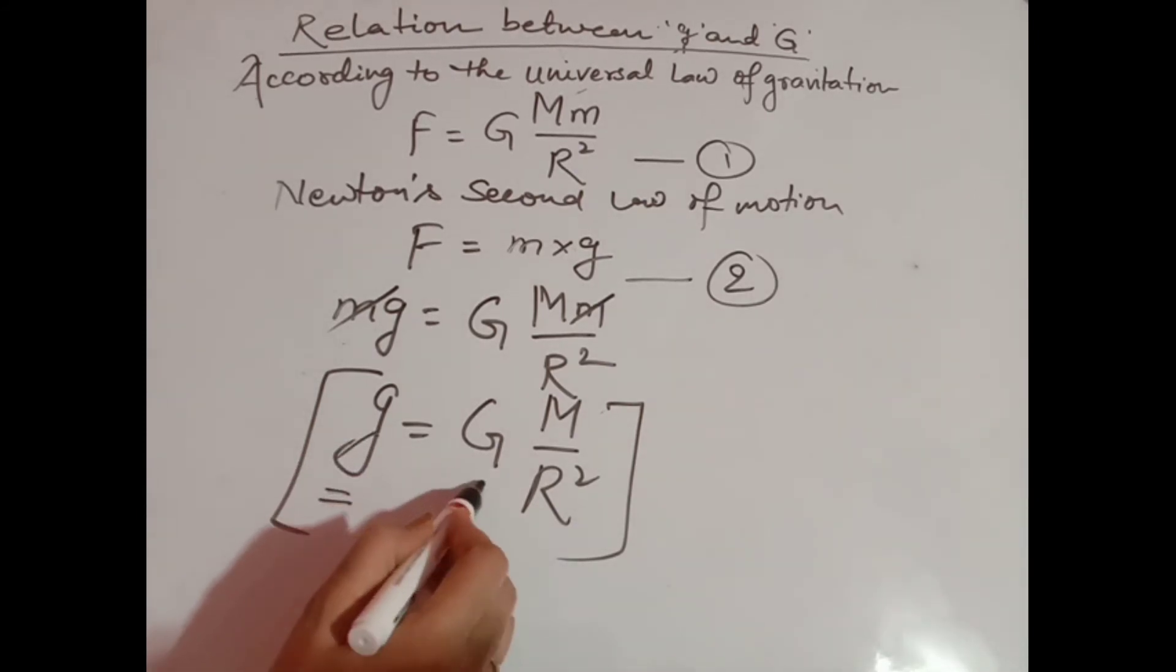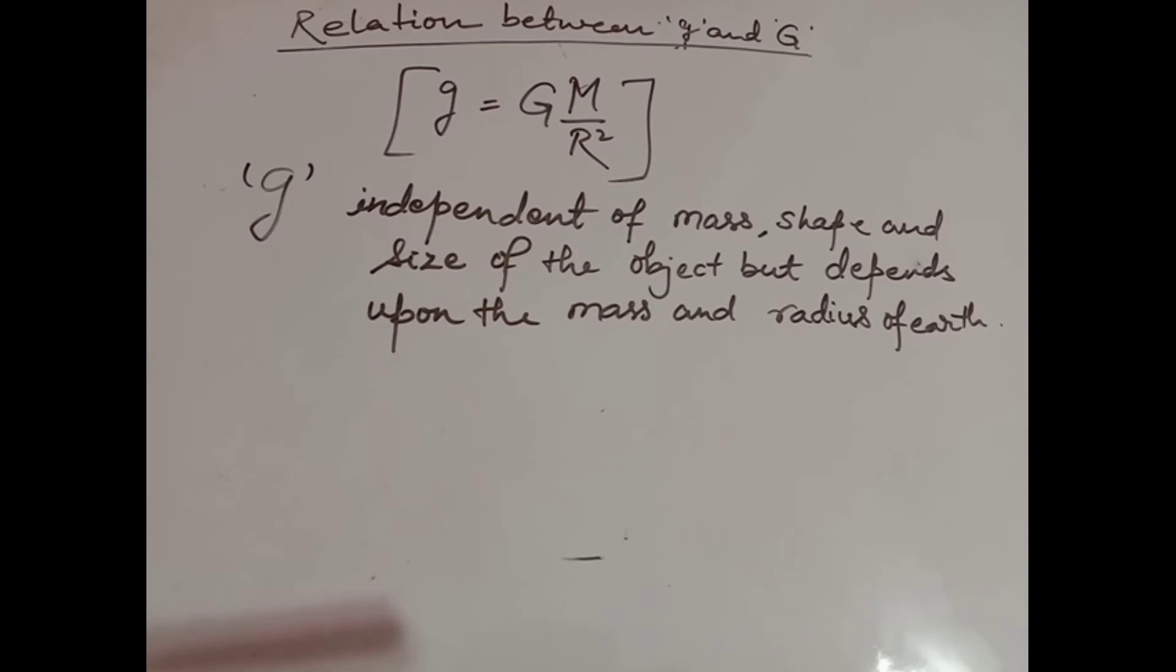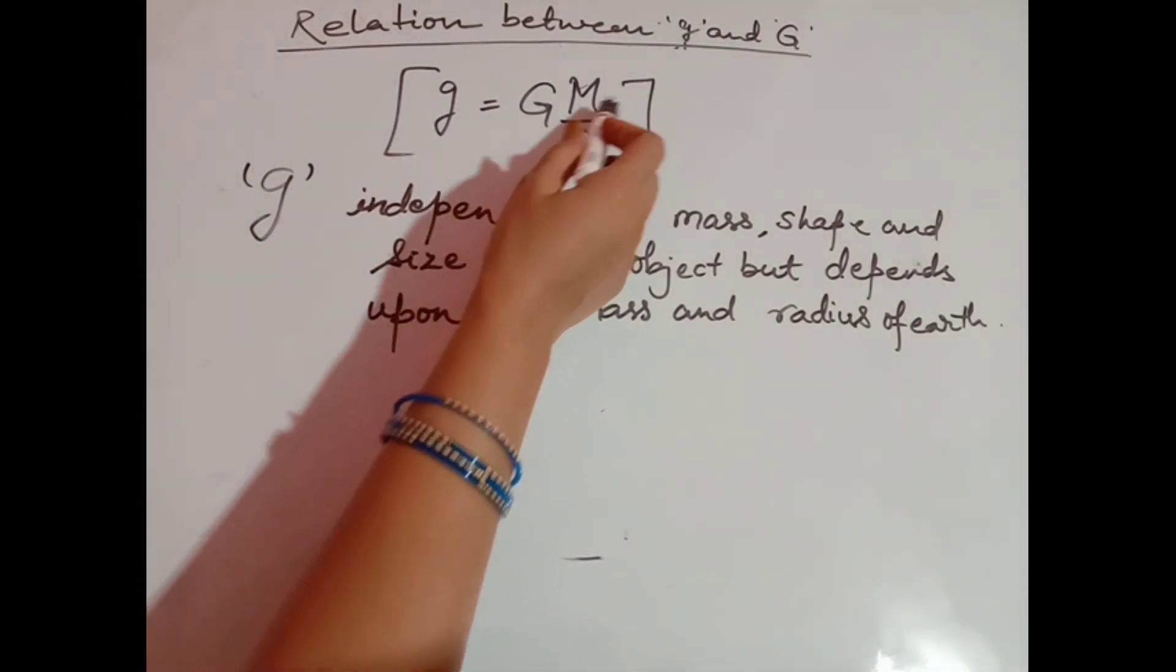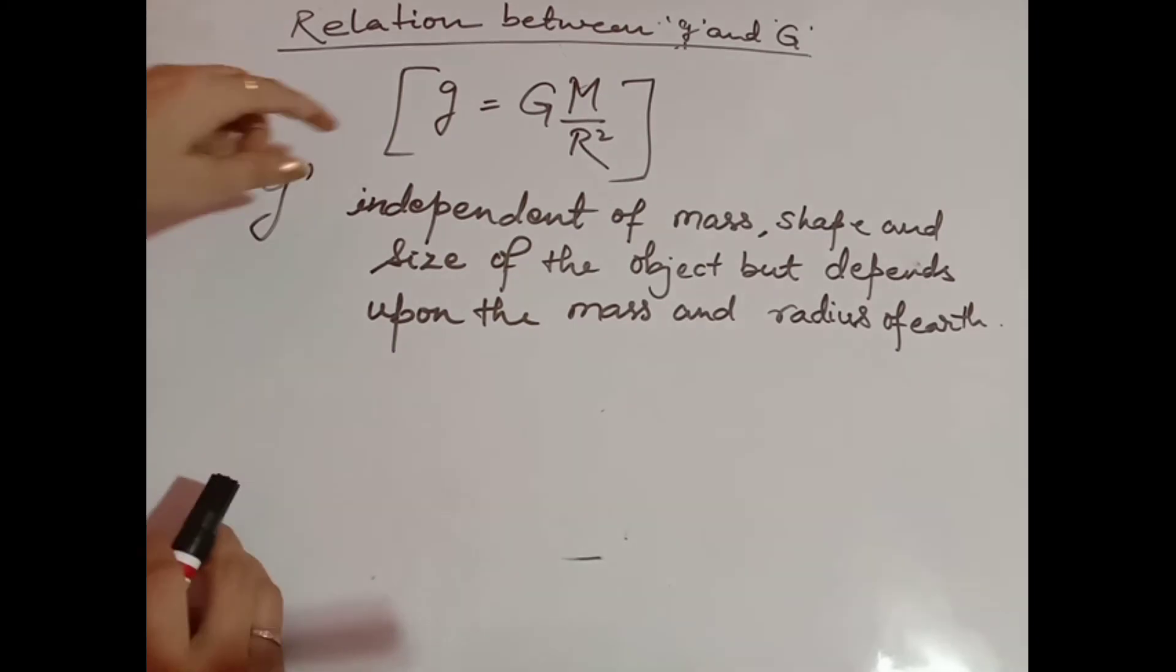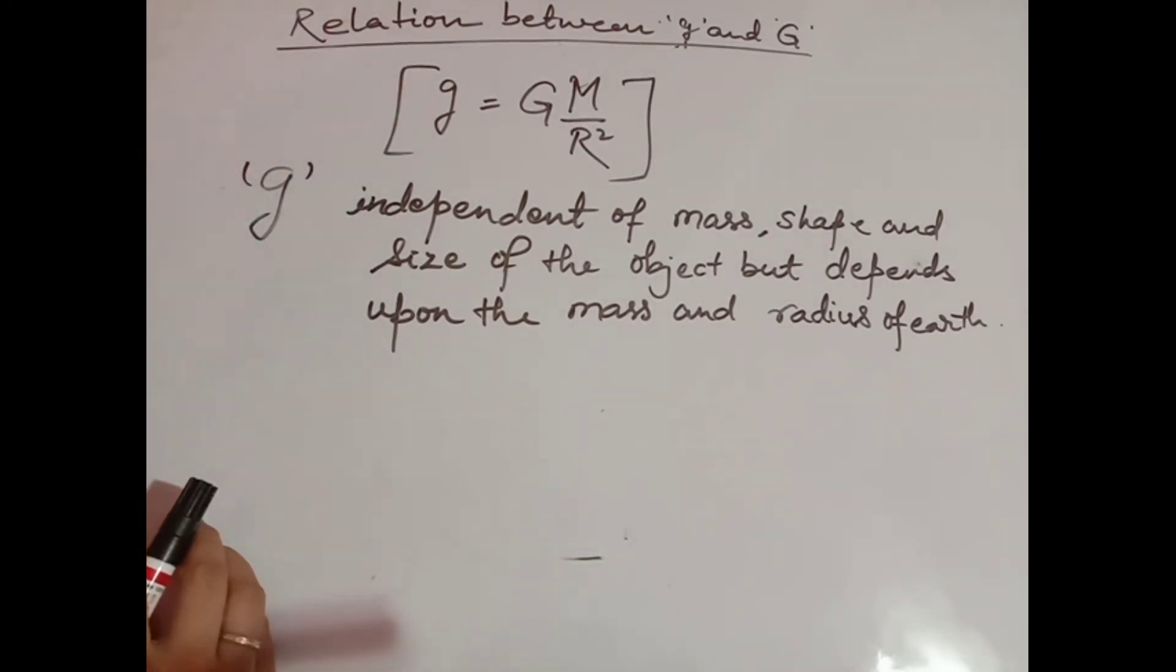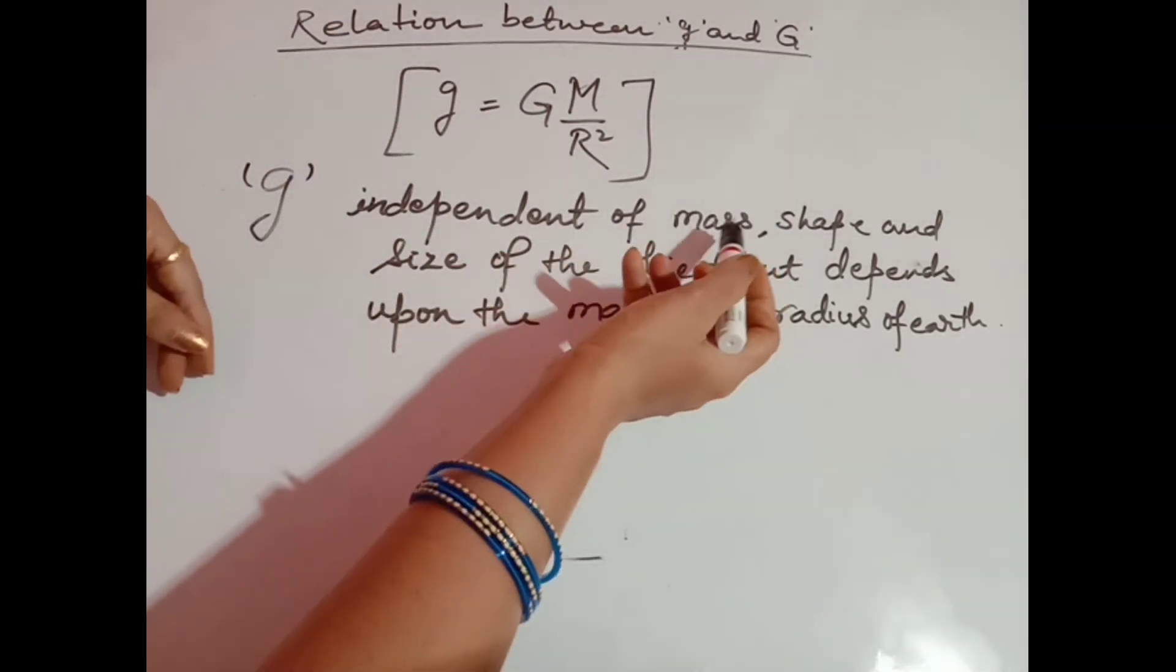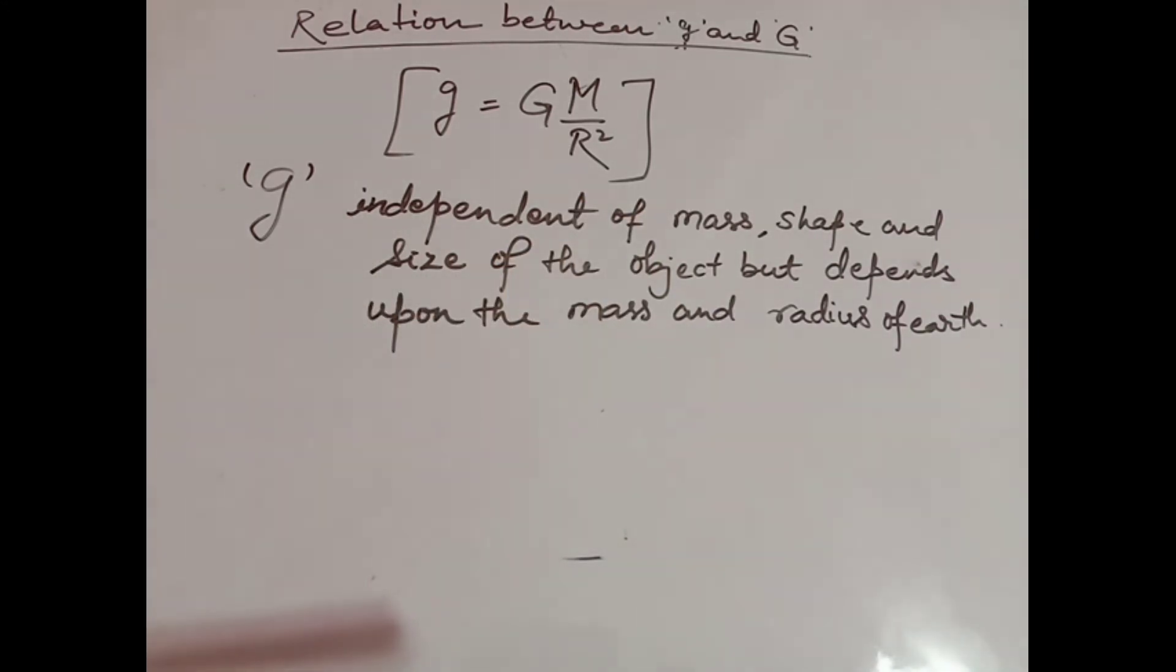This is the relation between acceleration due to gravity and universal gravitational constant, where M is the mass of the Earth and R is the radius of the Earth. Observe this equation properly: small g equals capital G times M divided by R square.